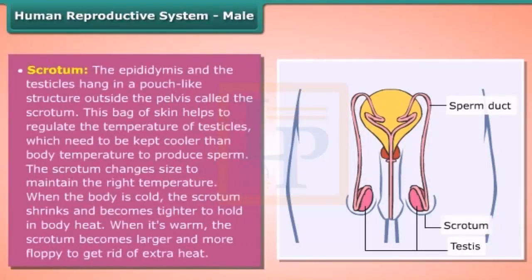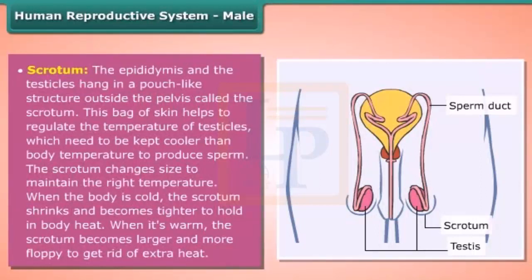The epididymis and the testicles hang in a pouch-like structure outside the pelvis called the scrotum. This bag of skin helps regulate the temperature of the testicles, which need to be kept cooler than body temperature to produce sperm. The scrotum changes size to maintain the right temperature: when the body is cold, the scrotum shrinks and becomes tighter to hold in body heat.